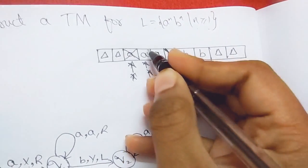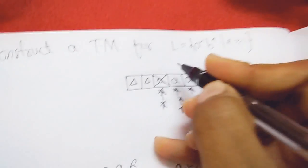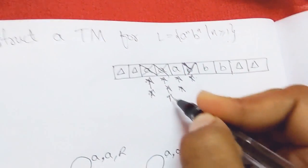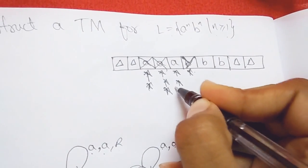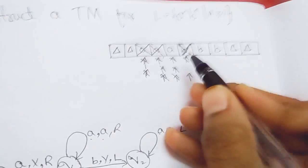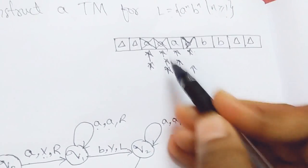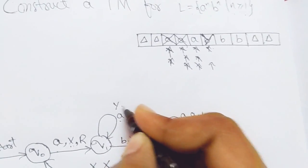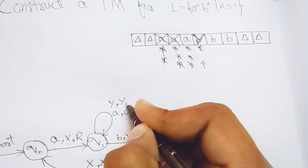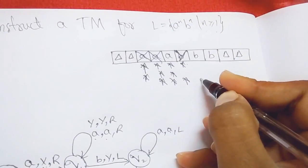Back in q0, the machine sees A: replace it with X and move right. The header moves right, A is replaced with X. Then the header sees Y — Y is the already-processed B — so Y is replaced with Y itself and the header moves right.